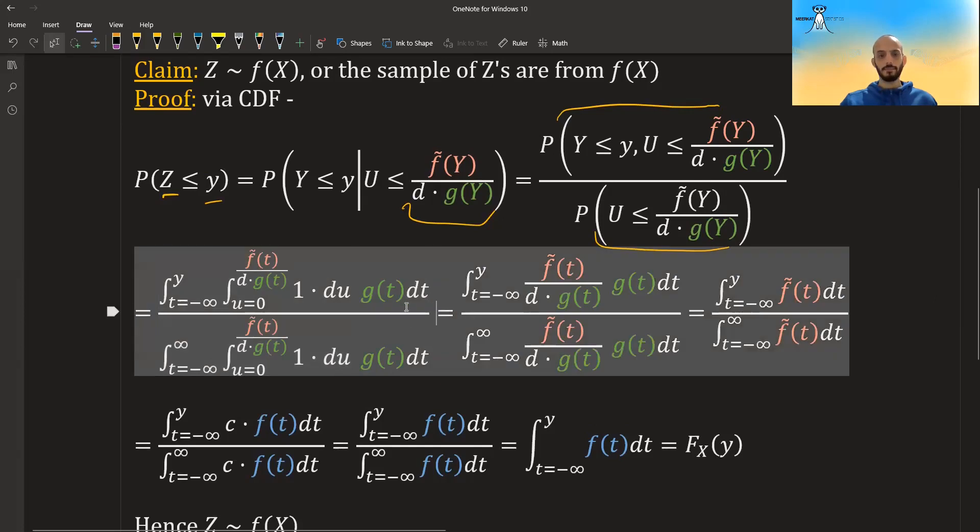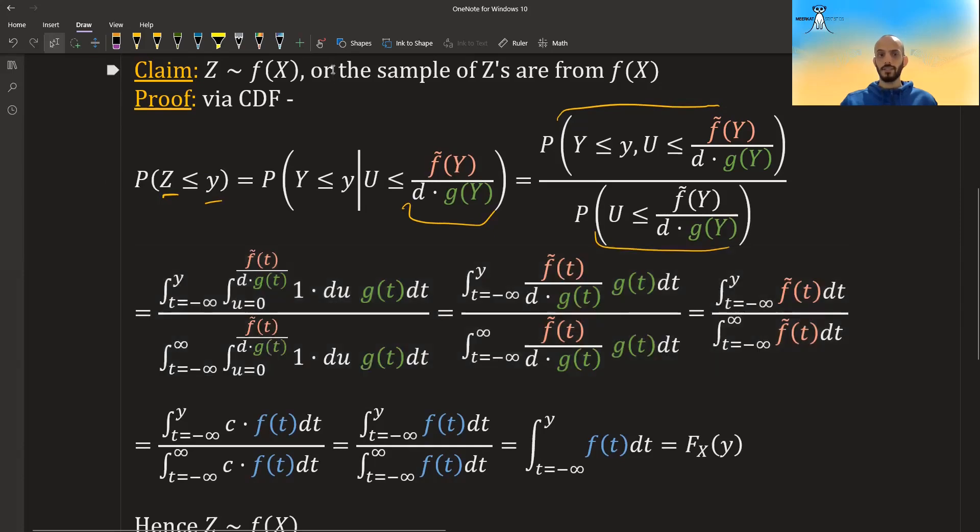And why do we do this? Because, well, let's see, what is the integral of 1 du? It's just u. The integral of 1 du is just u. And then we have to put the two values that we have, zero and the other value. And when we take the other value, we just get it here. We get it in the numerator and denominator.